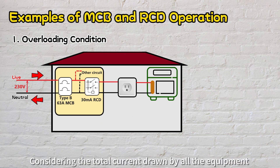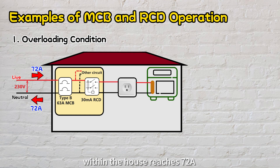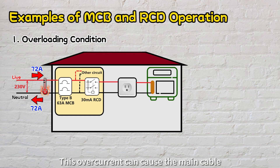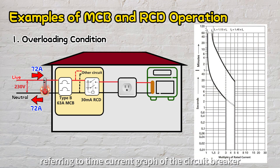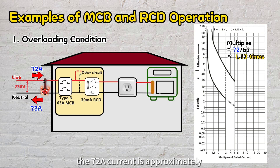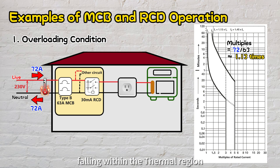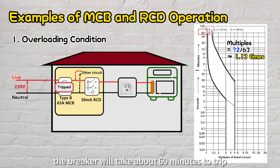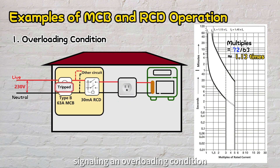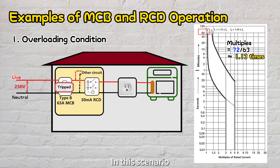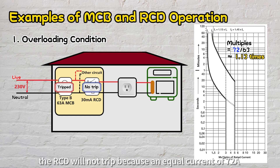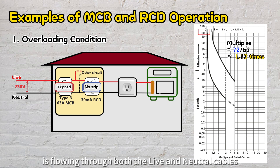Considering the total current drawn by all equipment within the house reaches 72 amps, slightly surpassing the 63 amps MCB rating. This overcurrent can cause the main cable and bimetallic plate within the circuit breaker to heat up. Referring to the time-current graph, the 72 amps current is approximately 1.13 times the rated current, falling within the thermal region. Consequently, the breaker will take about 60 minutes to trip, signaling an overloading condition and preventing a potential fire hazard. In this scenario, the RCD will not trip because an equal current of 72 amps is flowing through both the live and neutral cables.